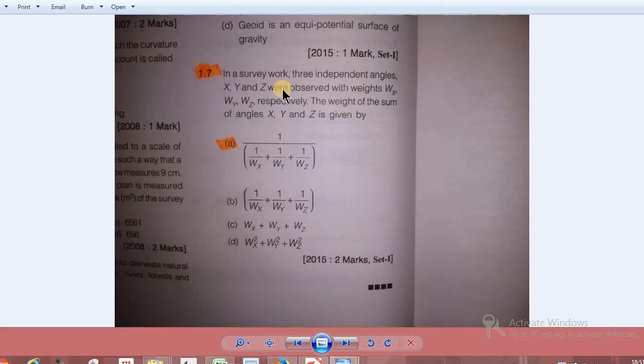Here we have three independent angles on X, Y, Z, and the weight of the sum of the angles X, Y, Z is given by 1/WX plus 1/WY plus 1/WZ.